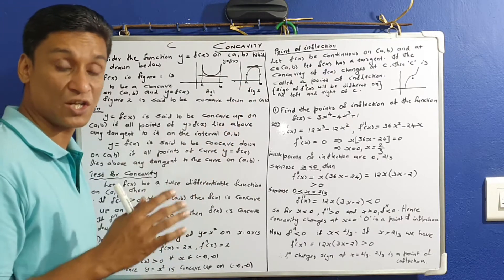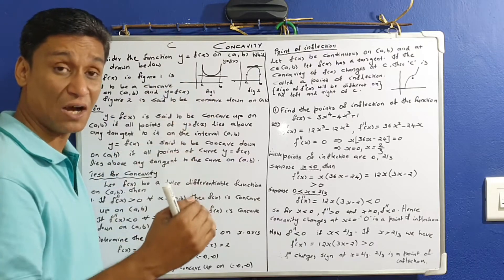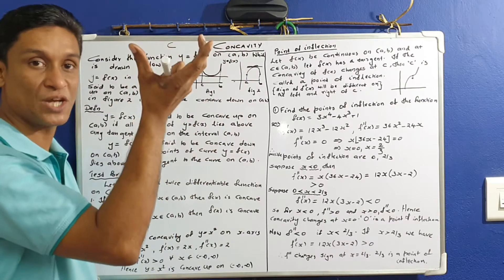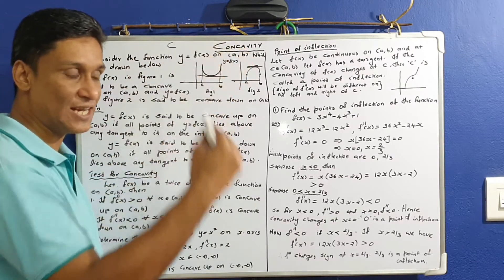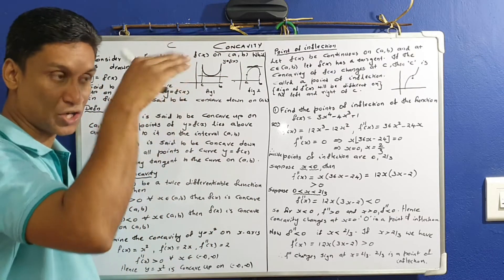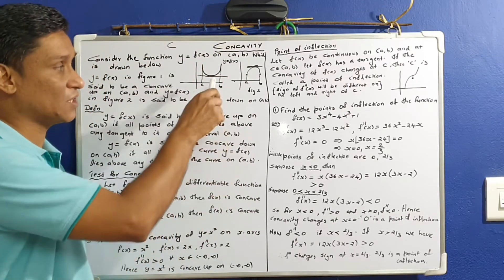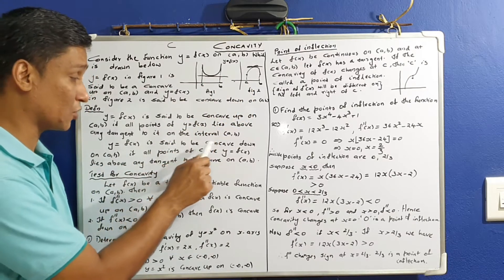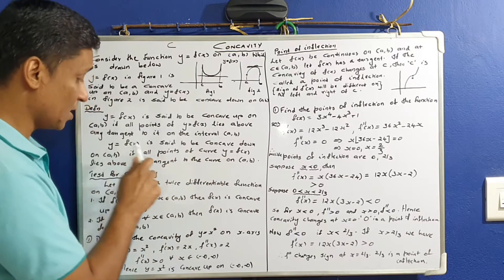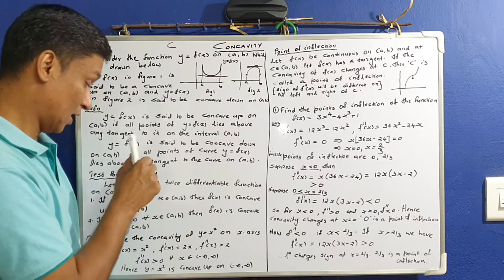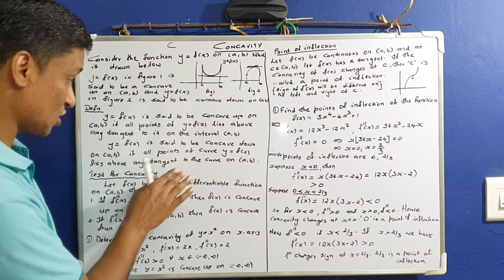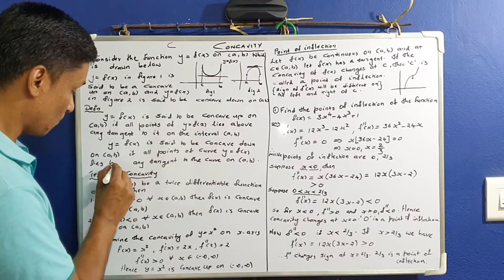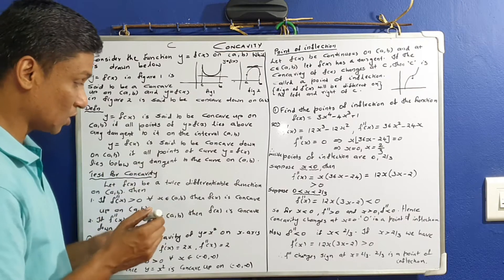The function is said to behave as concave down — concave down tangent in the middle, inverted u shape, concave is downwards. Concave down definition: y equals f is said to be concave down on AB if all points of the curve y equals f of x lie below any tangent to the curve on AB.